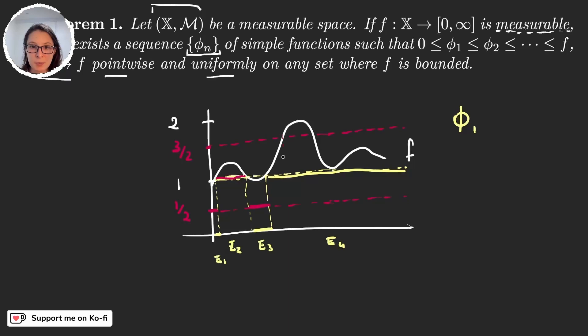So now we have the intervals E₁, E₂, E₃ like before, but this part changes. We have E₄, E₅, and this last one E₆. So now in E₄ the function is again going to take the value 1 because it's greater than 1 but smaller than three over two.